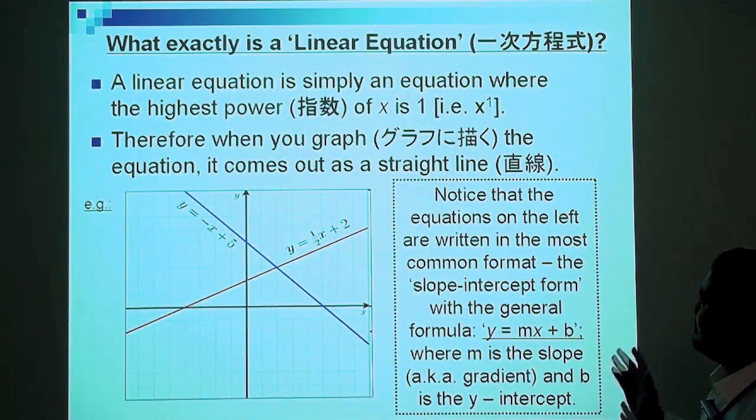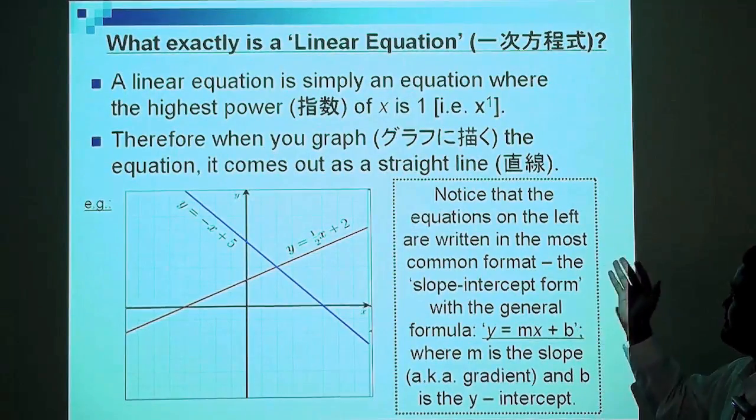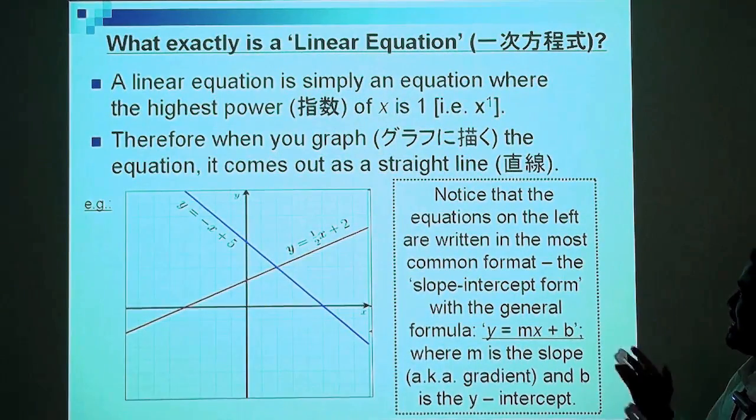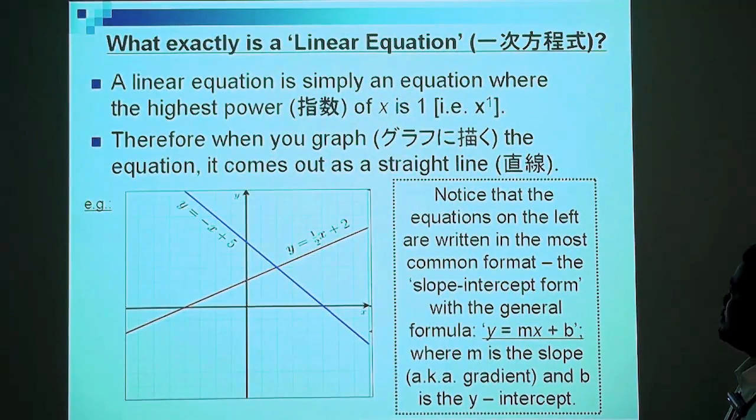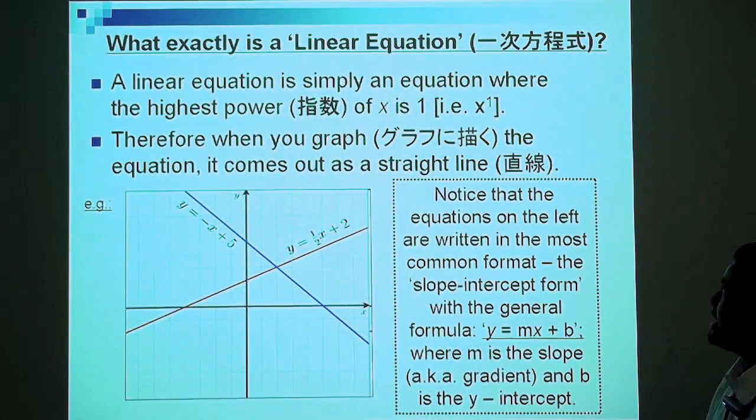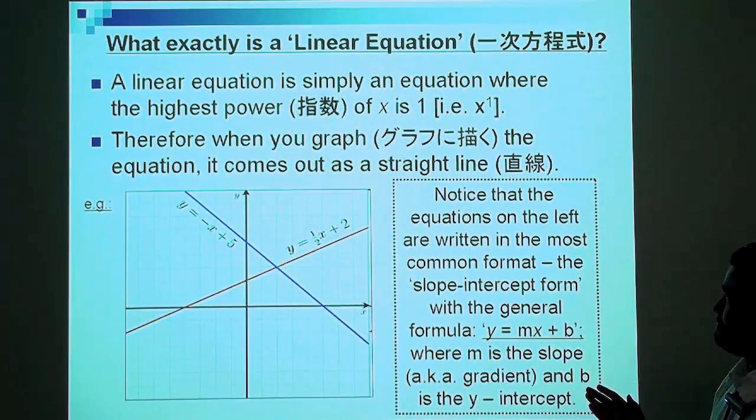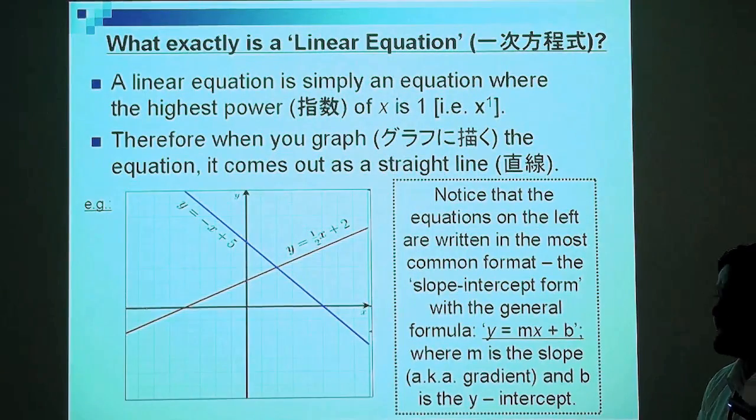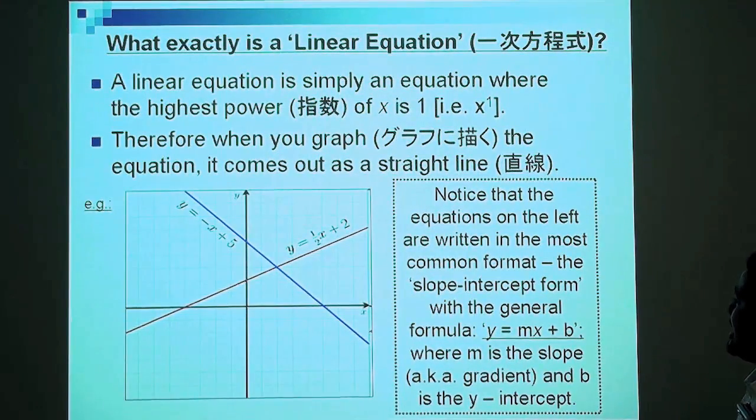What exactly is a linear equation? A linear equation is simply an equation where the highest power of x is 1, x to the power of 1. Therefore, when you graph the equation, it comes out as a straight line.